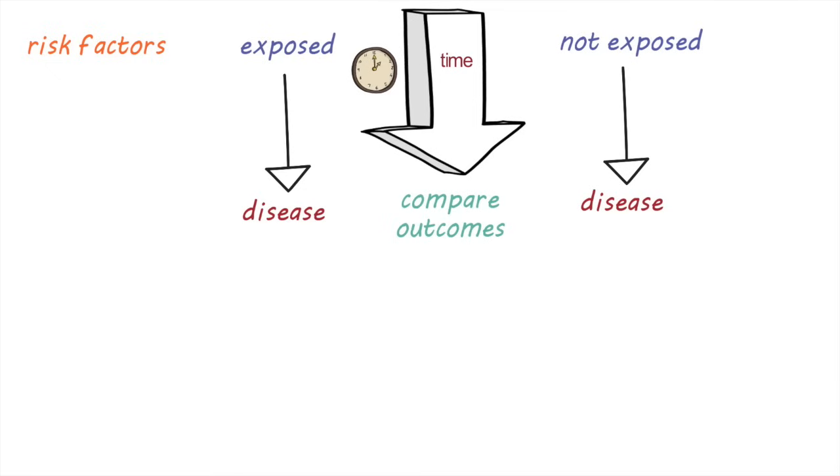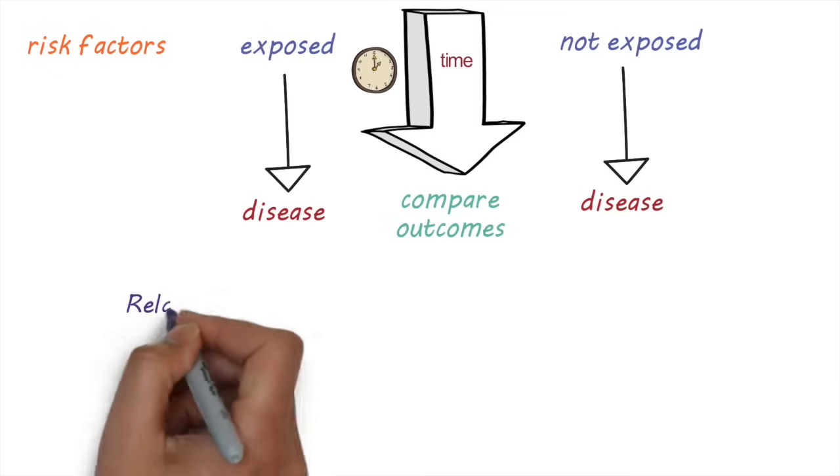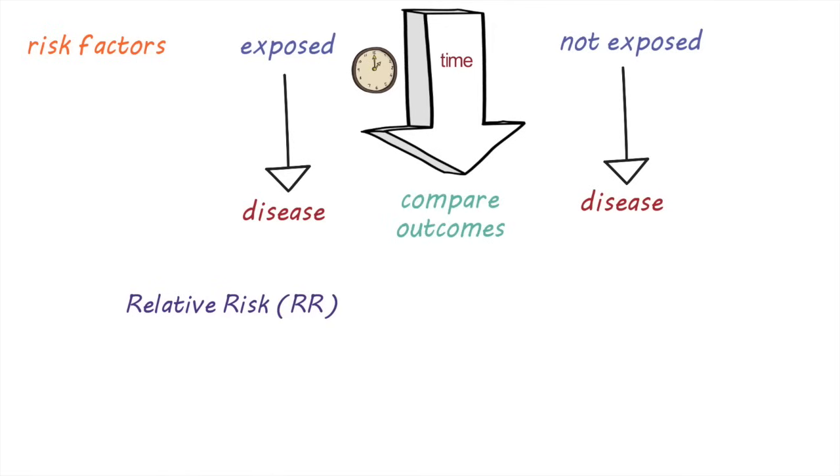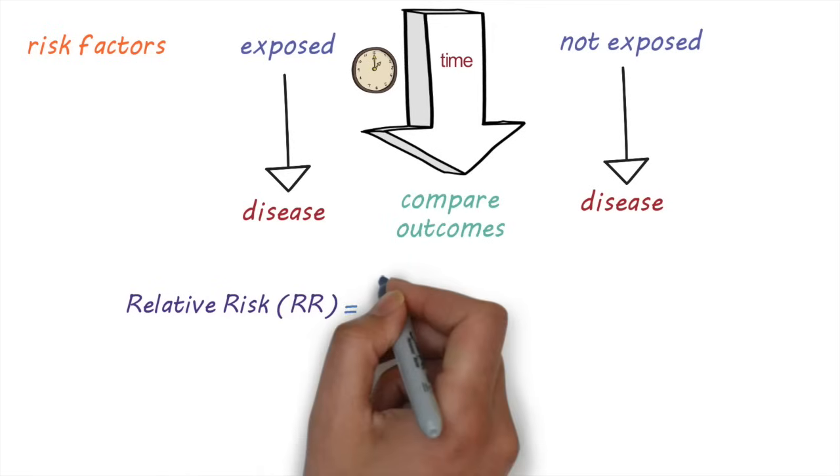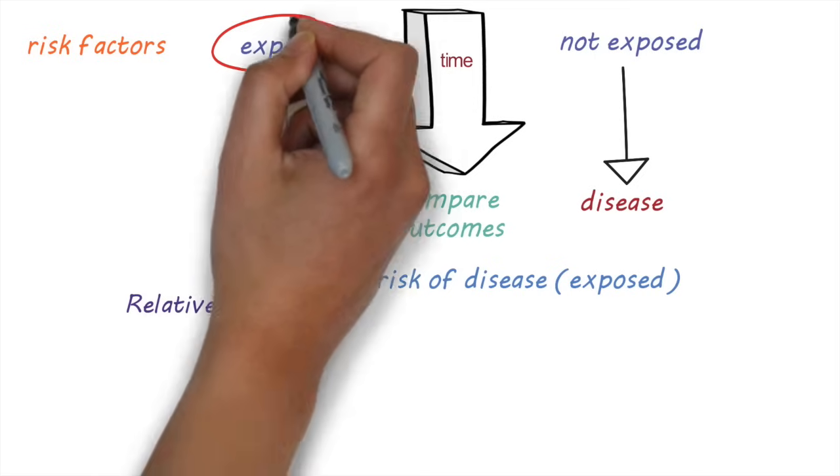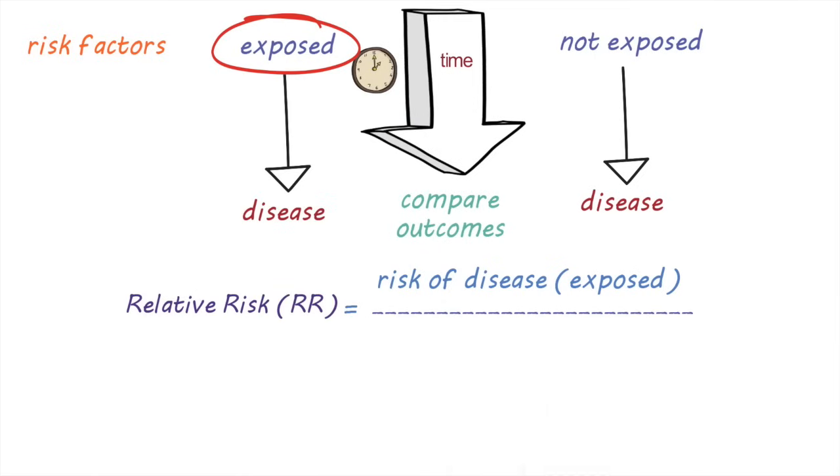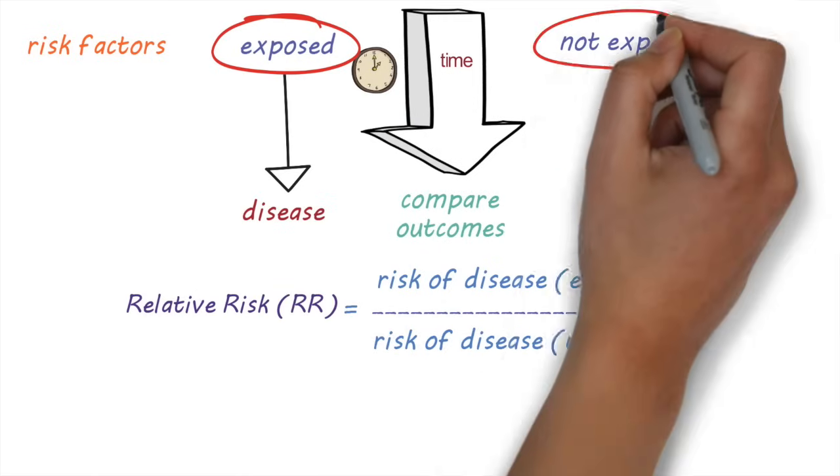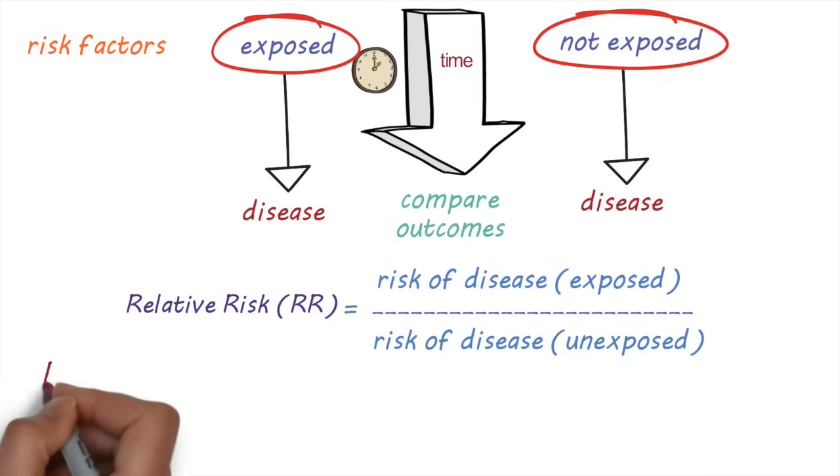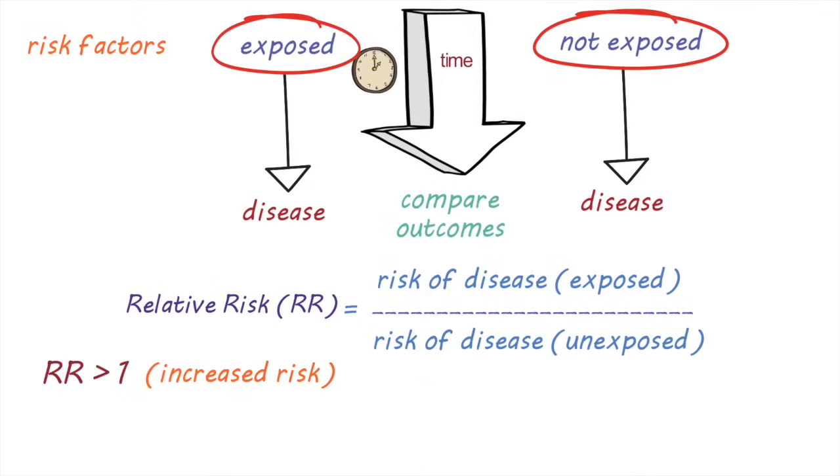The main measurement used in cohort studies is called the relative risk. A relative risk is the ratio between the risk of disease in the exposed group compared to the risk of disease in the unexposed group. A relative risk of greater than one means that the exposure is associated with an increased risk of the disease. If it is one, it indicates that the risk is the same, and if it's less than one, it indicates that the risk is lower.